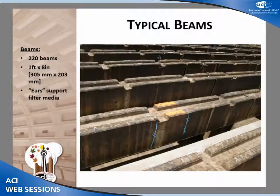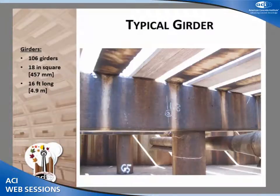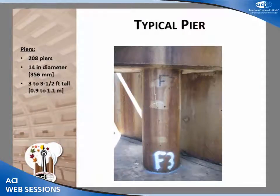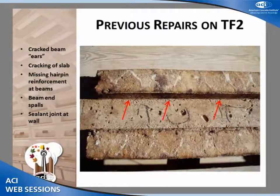Typical beams are 220 beams spaced two feet on center, one foot deep, eight inches wide. The unique feature they have are these two-and-a-quarter-inch-tall ears that support the filter media and allow water not to collect on top of the beams. Typical girders are 18 inches square, 16 feet long — there are 106 of those. The piers supporting those girders were 14 inches in diameter, ranging in height between three and three-and-a-half feet.